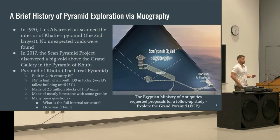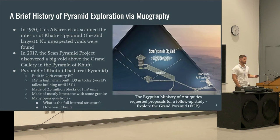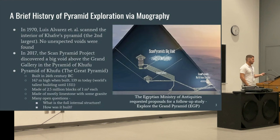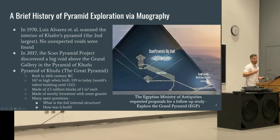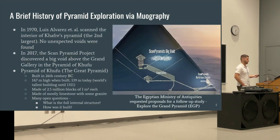This actually has a much deeper history. The first attempt at imaging pyramids with muography was by Louis Alvarez in 1970 — a Nobel laureate also related to the Manhattan Project. He imaged the second largest pyramid and found no unexpected voids. Then in 2017, the ScanPyramid project claimed to discover a grand gallery. Because of this, the Egyptian Ministry of Antiquities requested a follow-up study called the Explore the Grand Pyramid project, or EGP.